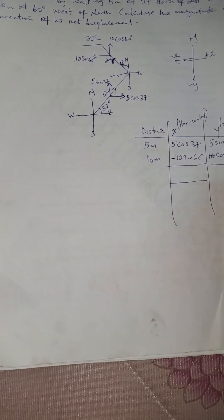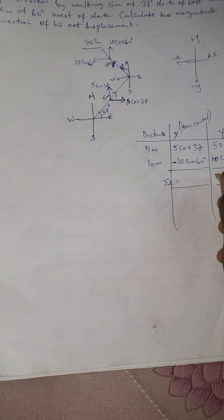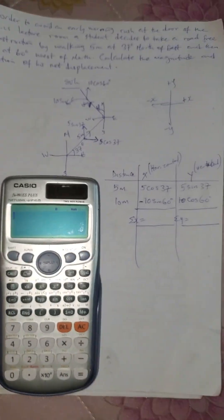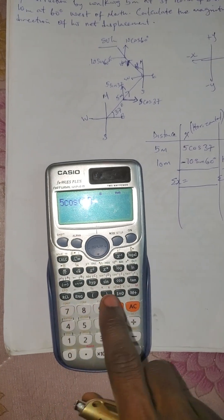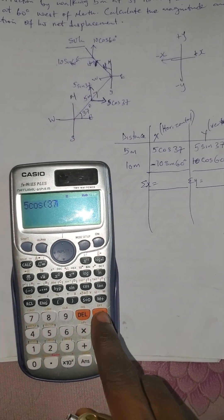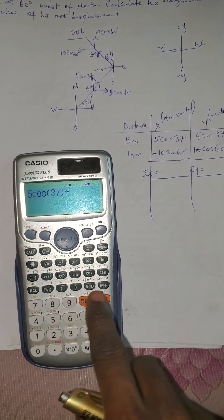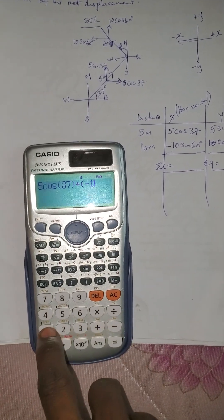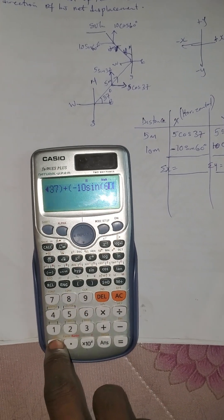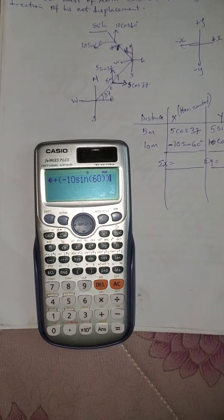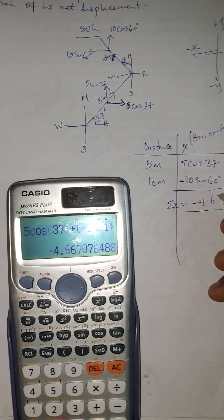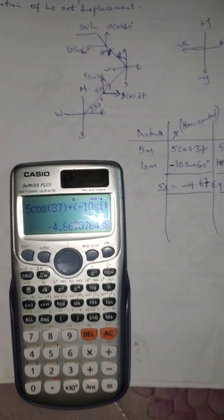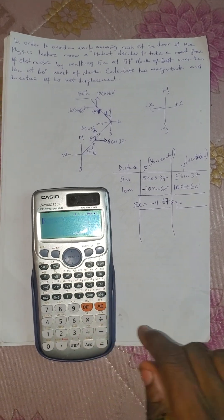Let's find the summation of x and summation of y. Summation x: 5 cos 37 plus (minus 10 sine 60). This gives minus 4.67, approximately minus 4.67.